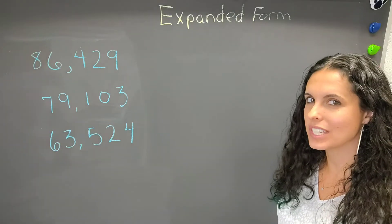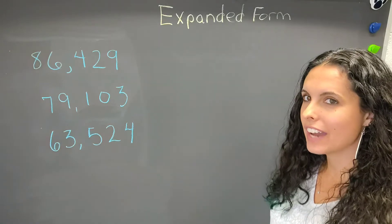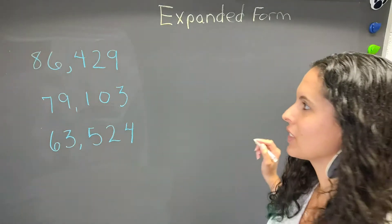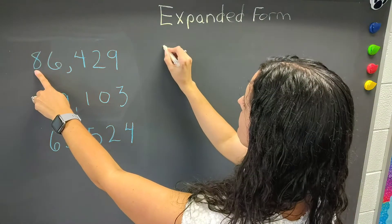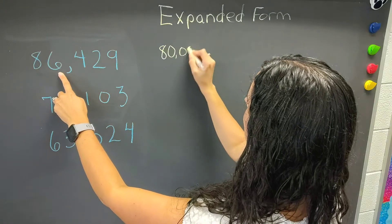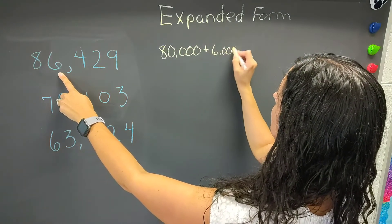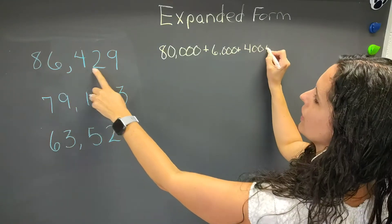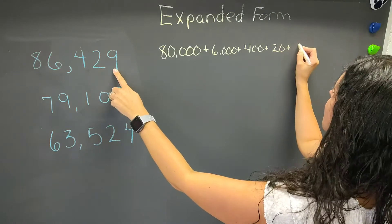Now we're going to write these numbers in expanded form. Expanded form is where we take the value of each digit and write it out with plus signs in between. We're going to start with the eight — it's in the ten-thousands place — so that gives us 80,000 plus 6,000 plus 400, plus 20, plus 9.